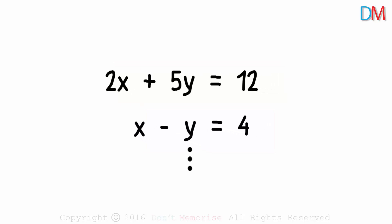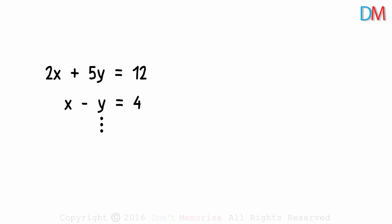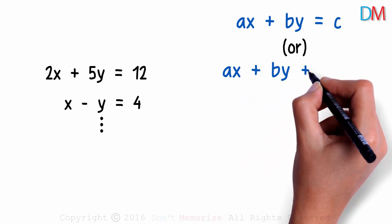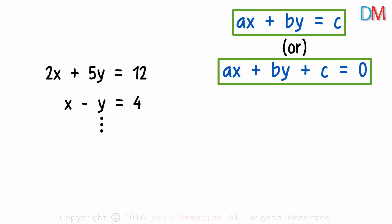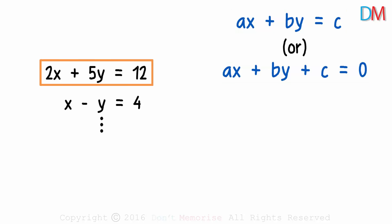We can say that a linear equation in two variables is of the form ax plus by equals c, or sometimes it's also written as ax plus by plus c equals zero. Both are correct. For example, the first equation can also be written as 2x plus 5y minus 12 equals zero.